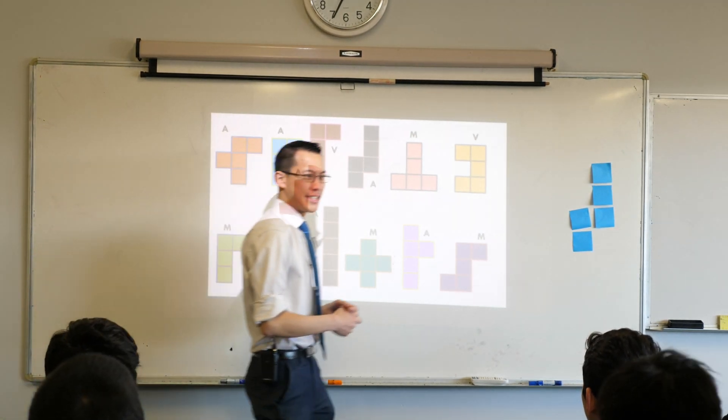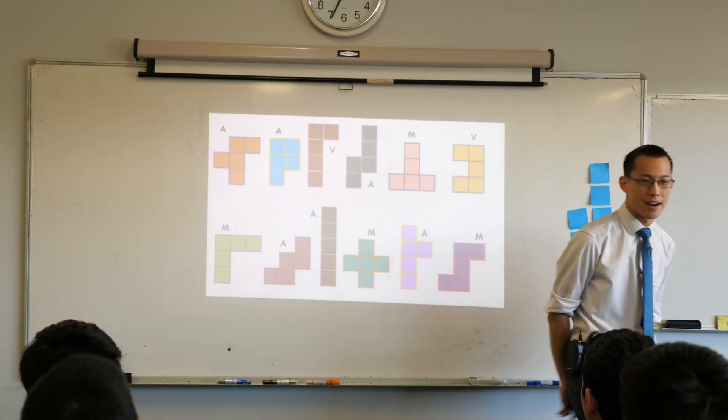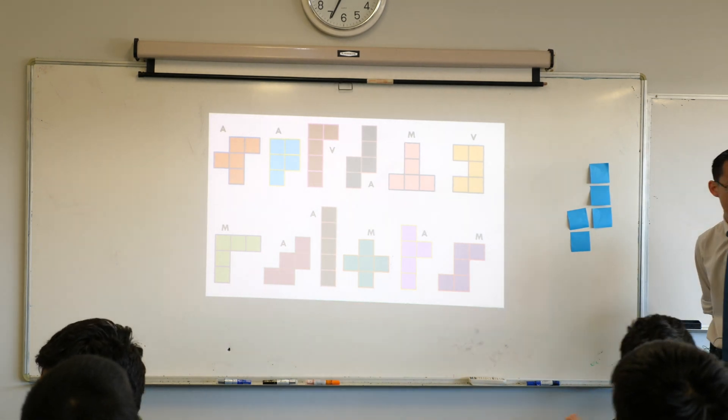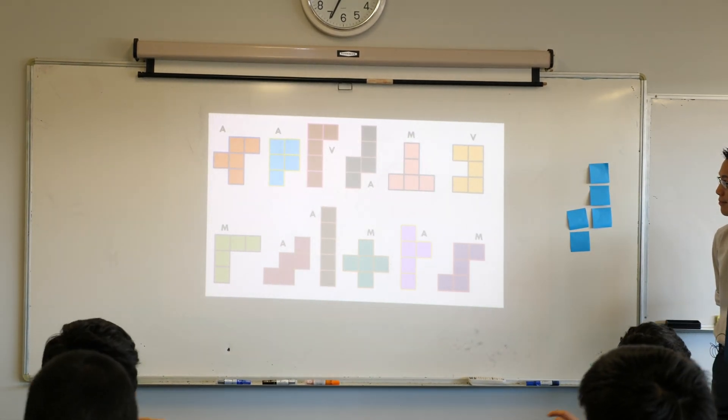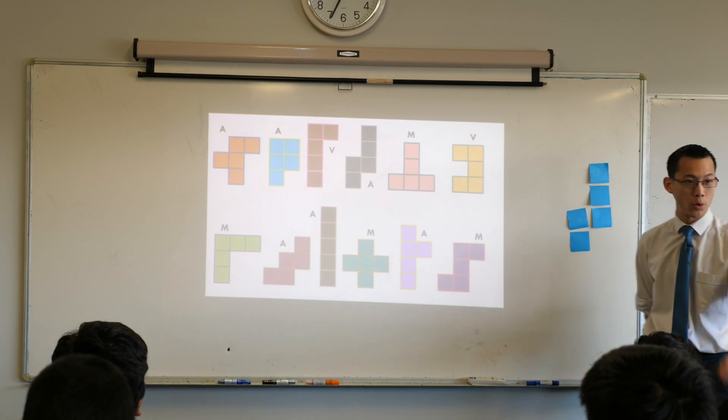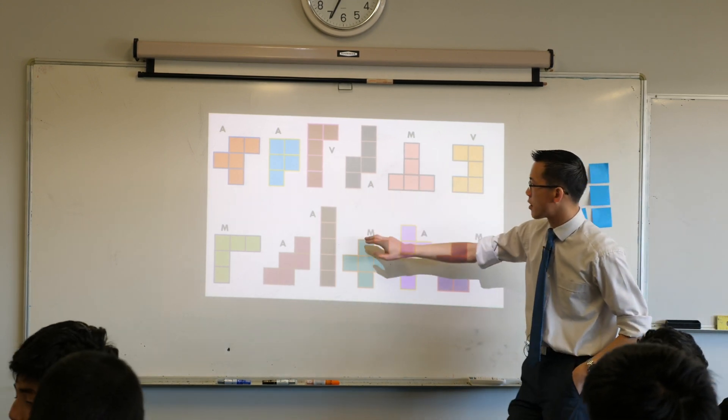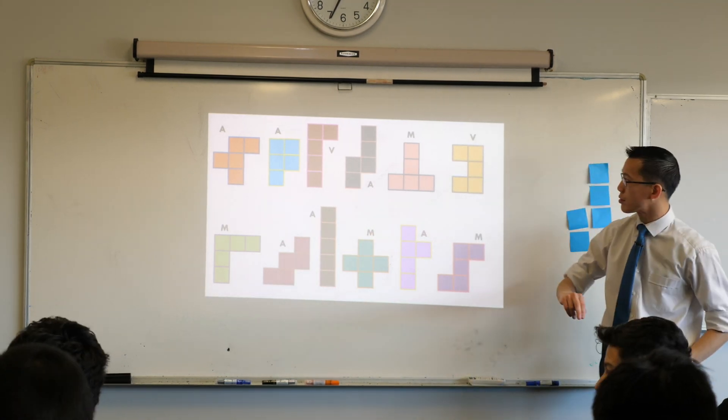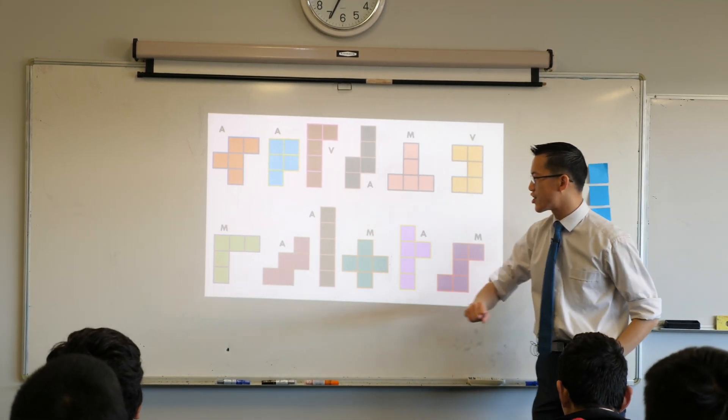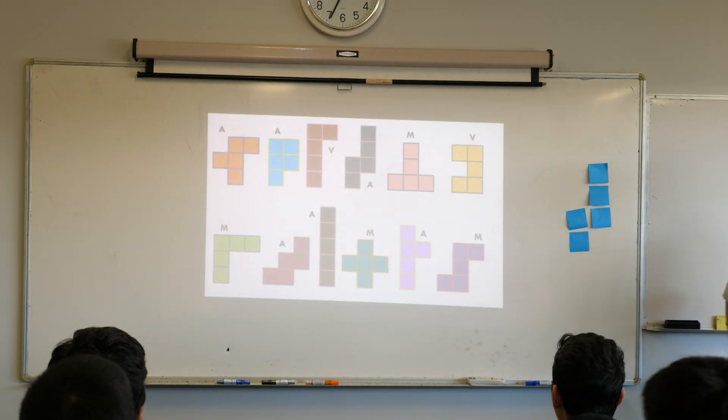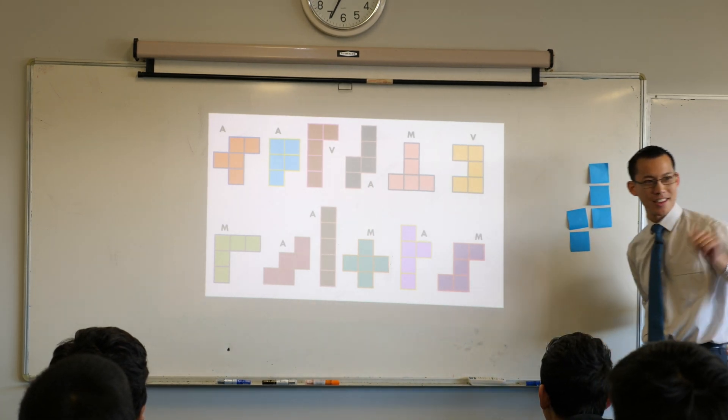So here's my breakdown. I'd love you to have a quick comparison with what you think each of them is. I count, if you want to quickly check for yourself, I count one, two, three, four minerals, one, two vegetables, and then the rest are animals.